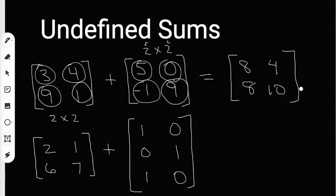You can only add matrices together if they have the same dimensions. That's why this example on the bottom is no good. This one is a two by two because it has two rows and two columns.